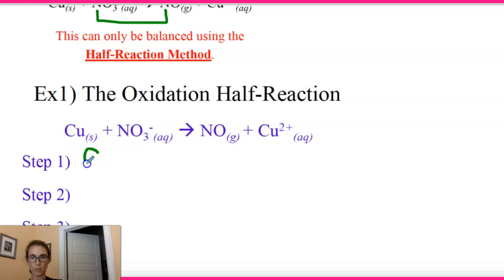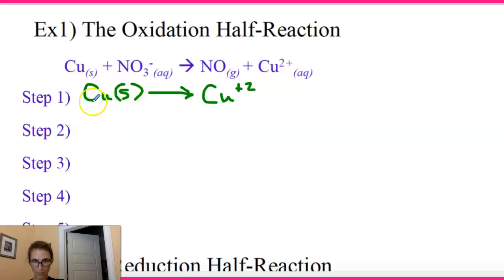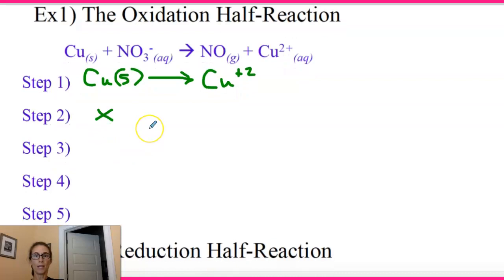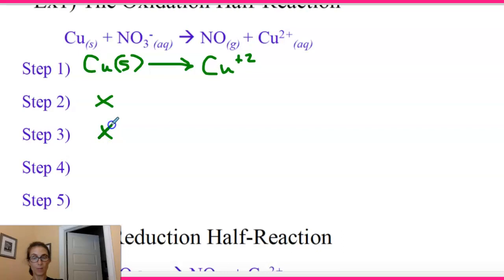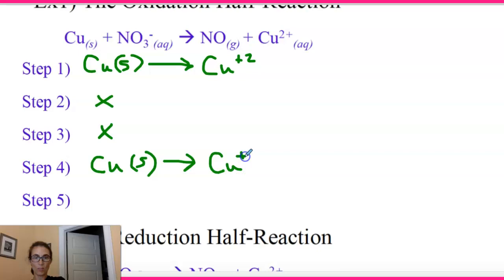Starting with the oxidation half-reaction: Cu solid goes to Cu²⁺. We have no oxygens to balance with H₂O and no hydrogens to balance with H⁺. So our next step is to add electrons to balance the charge. We have a charge of zero on the left and +2 on the right, so we need to add 2 electrons to the right side: Cu → Cu²⁺ + 2e⁻.